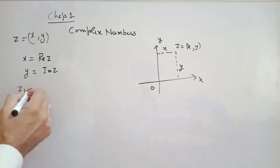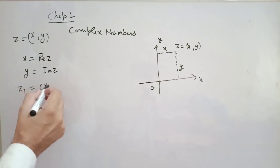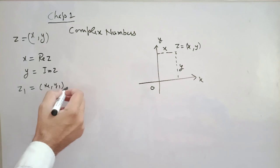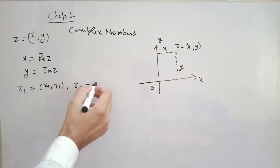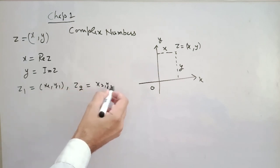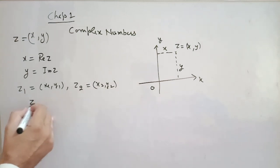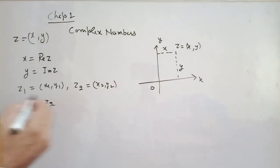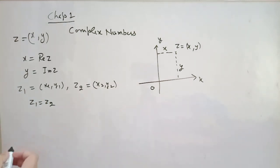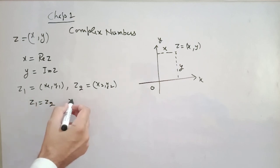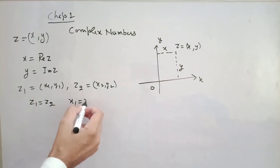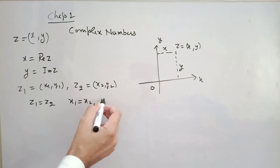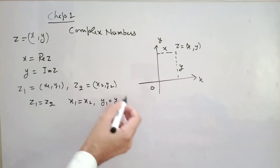Next, when do we say two complex numbers (x₁, y₁) and (x₂, y₂) are equal? These two are equal if and only if their real parts are equal and their imaginary parts are also equal. This is the definition of equality of two complex numbers.